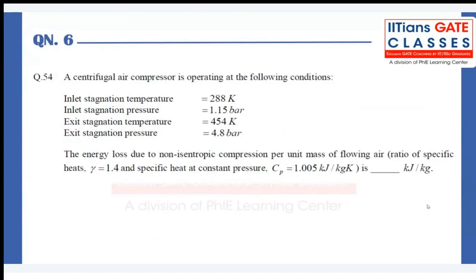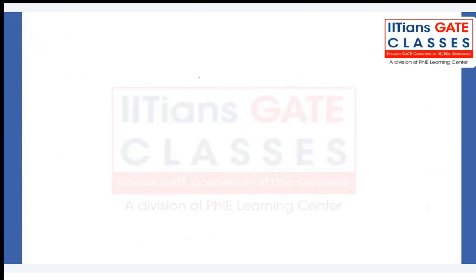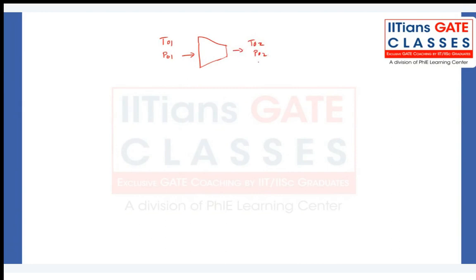So this is where we were. The centrifugal compressor — the information is given. Let us first draw the control volume of the centrifugal compressor with the given information. I have an inlet condition with T01 and P01 given in the problem, and outlet condition T02 and P02 is given in the problem. The properties of air are also given: gamma = 1.4, Cp = 1005 joules per kg Kelvin.